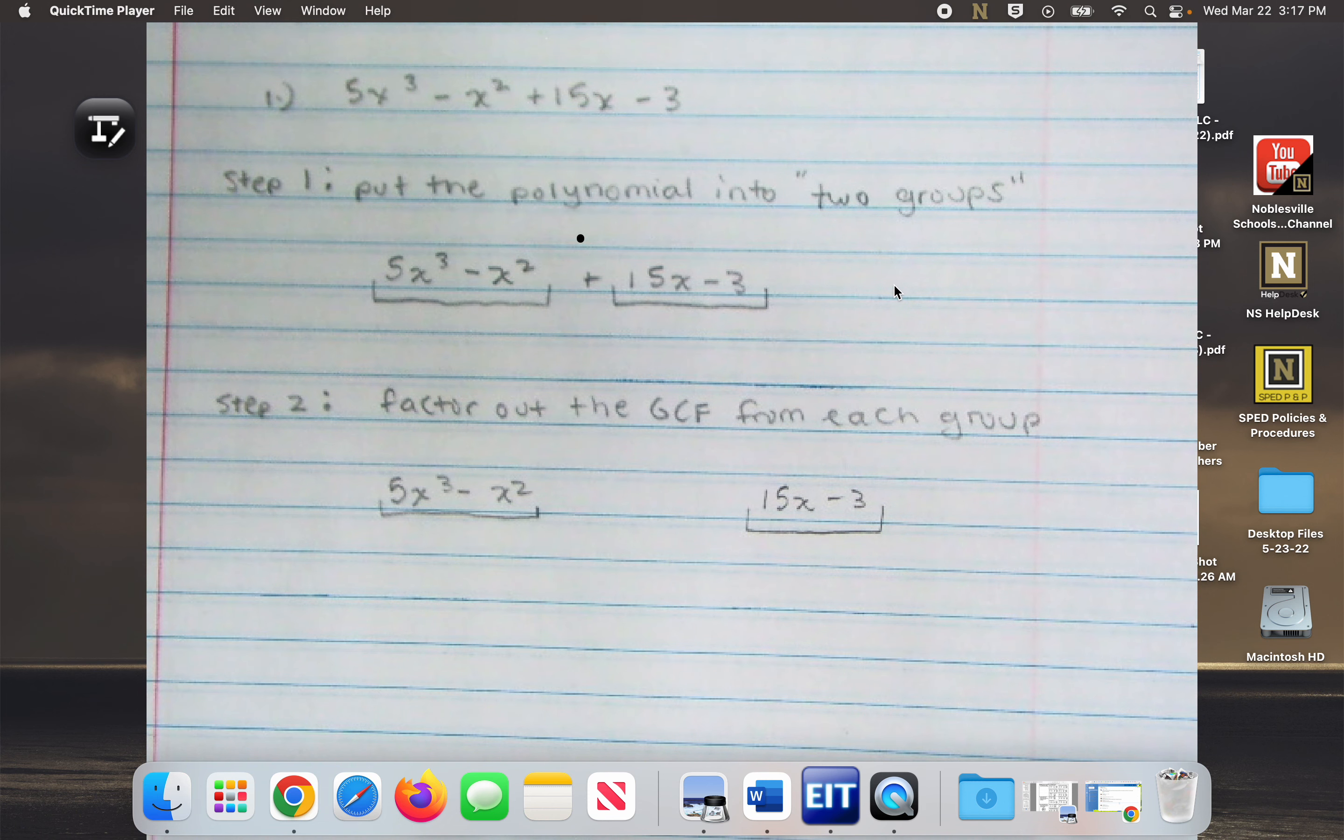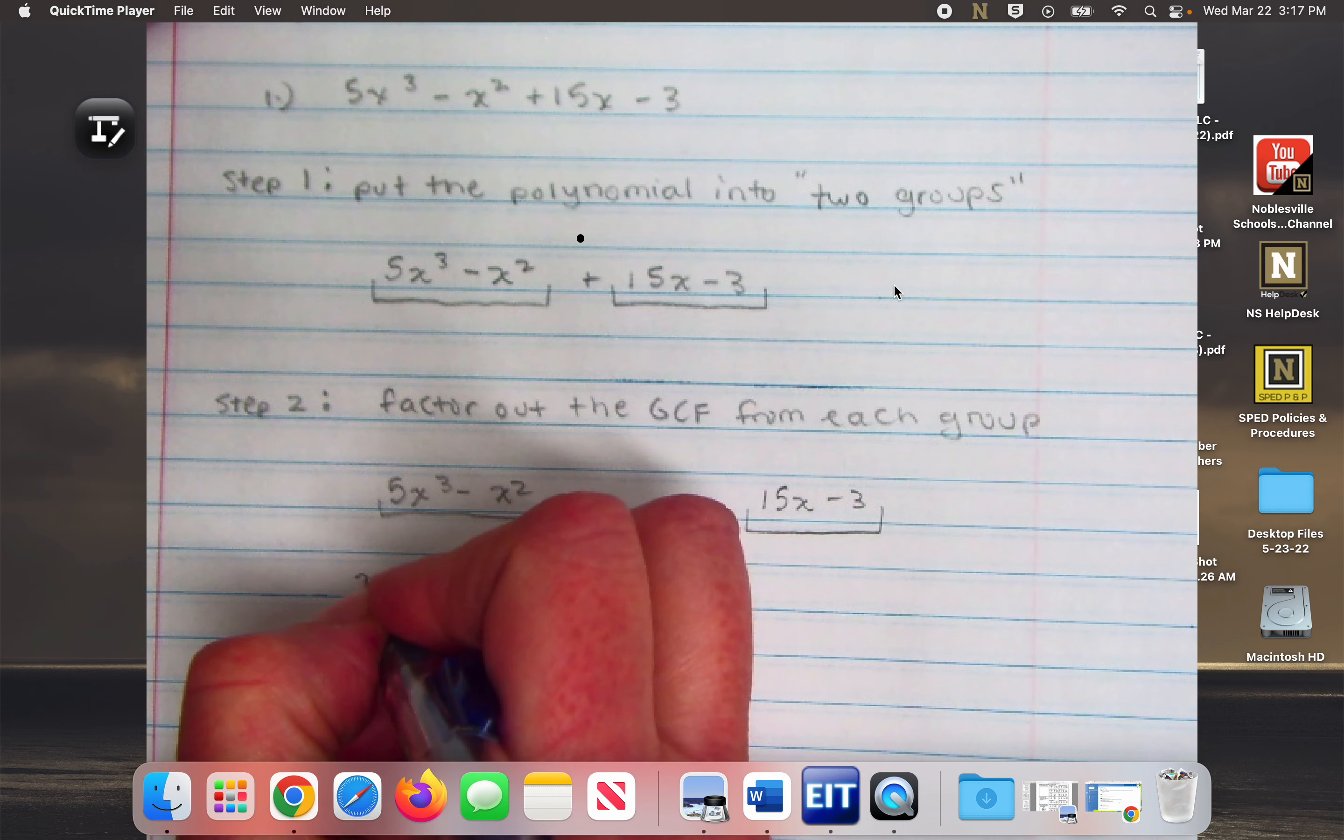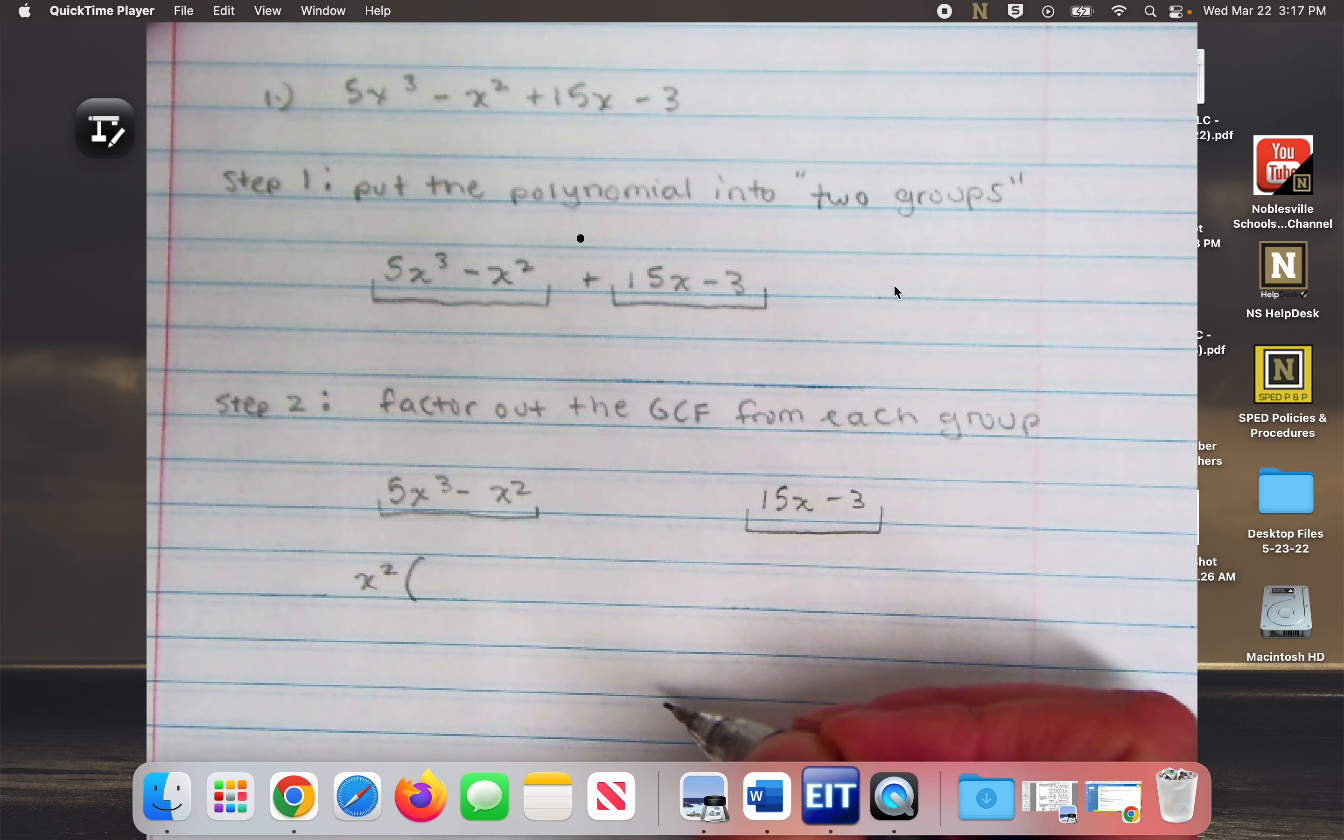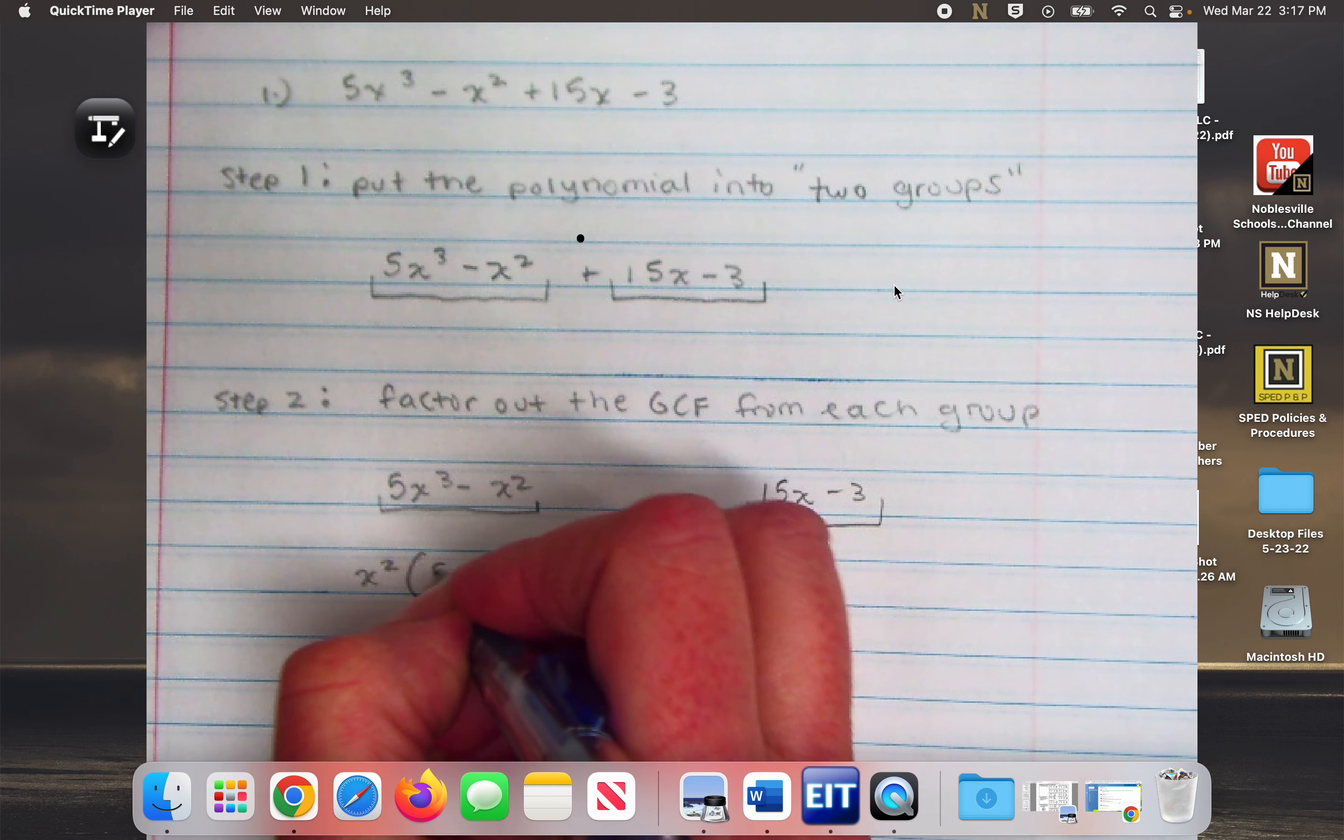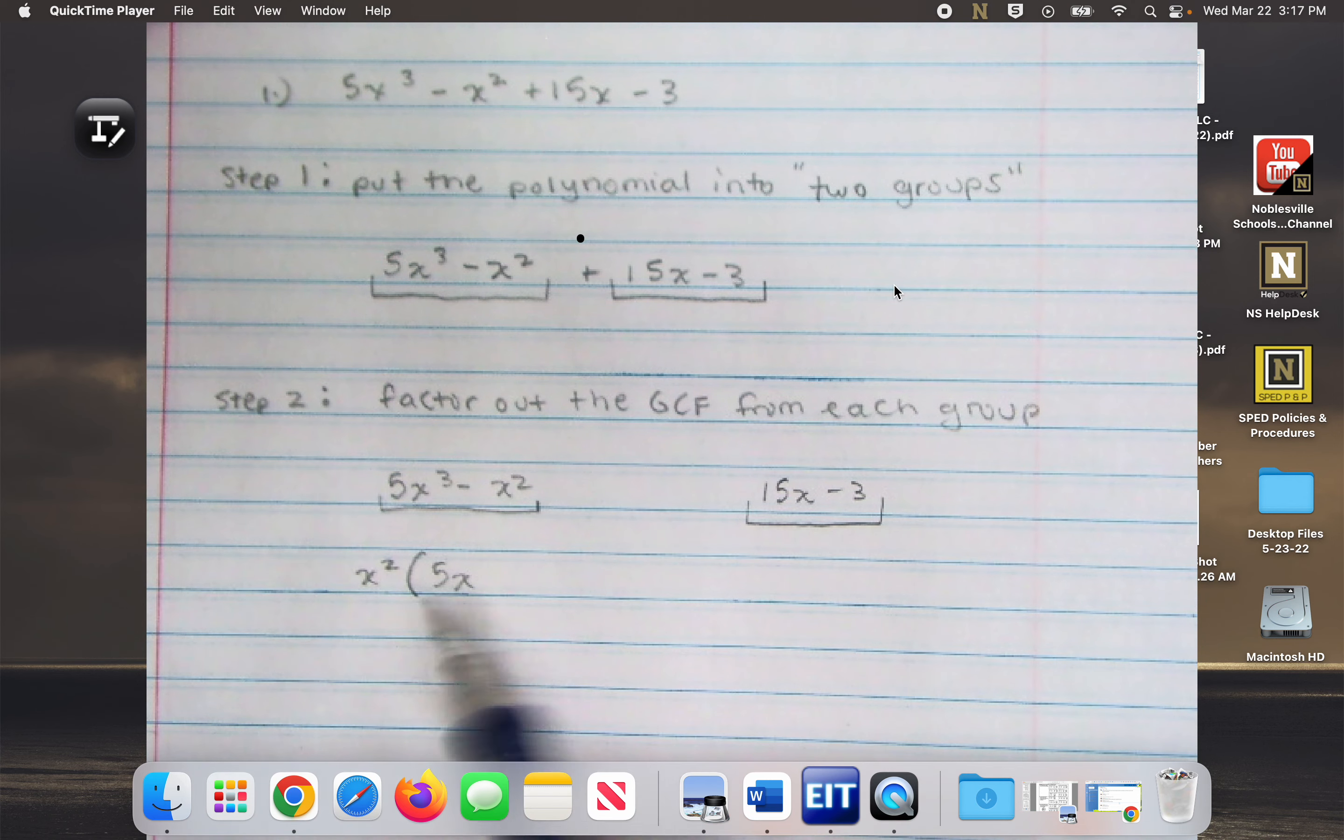When you look at that first group, what would be my greatest common factor that I can take out of both terms? x squared. So I'm going to have x squared times, and then remember I ask myself x squared times what will give me 5x to the third. So I'm going to have 5x.